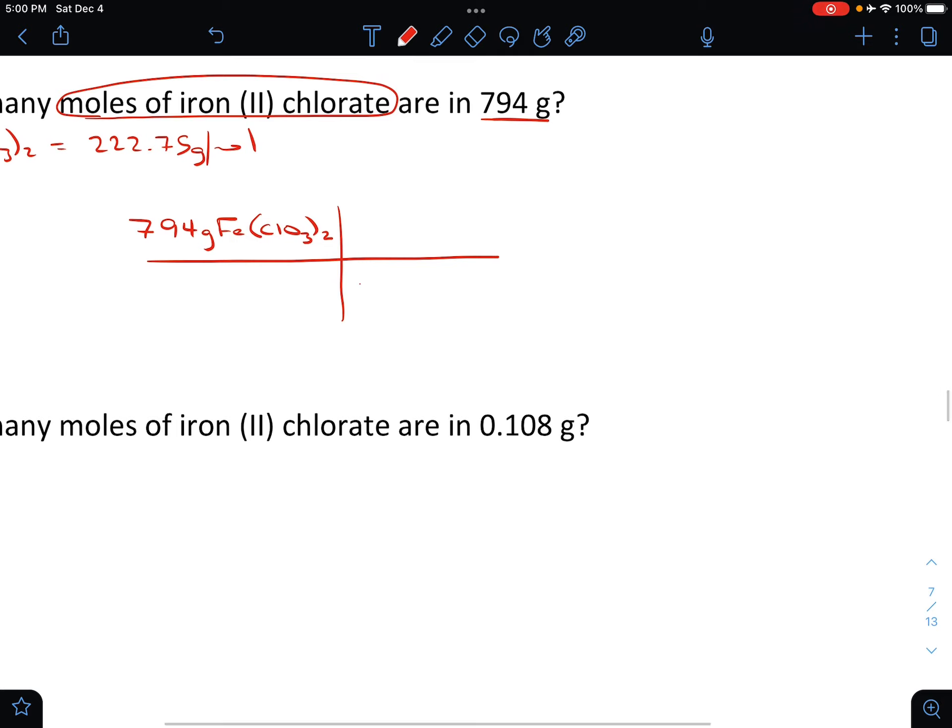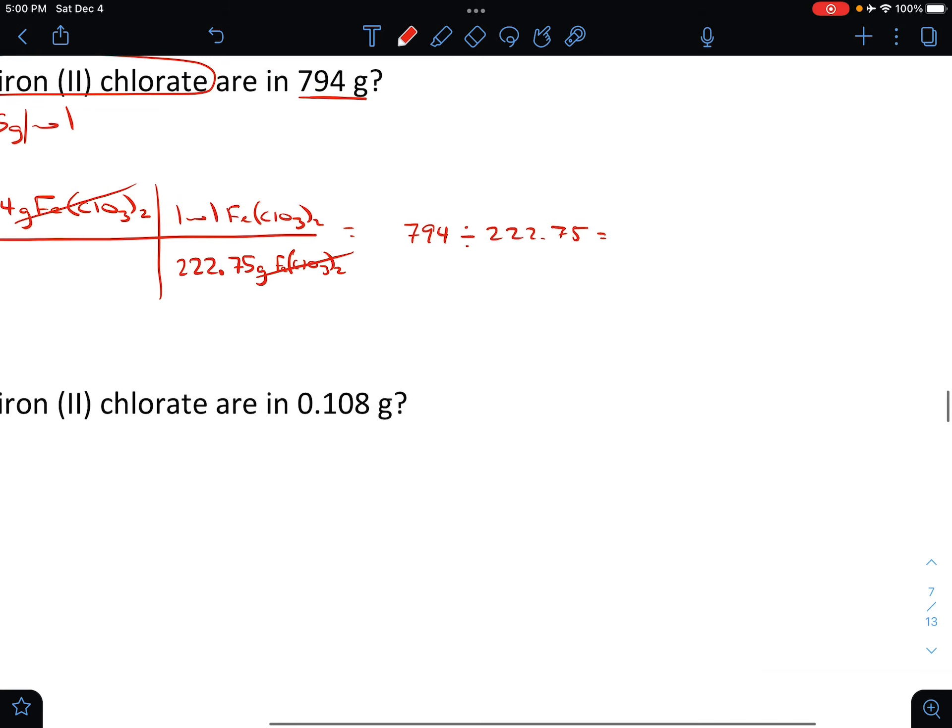And we're going to put 222.75 grams on the bottom, and one mole on top. Notice how this nicely cancels out our grams. All right, so all we're going to do in this is we're just going to take 794 and divide by 222.75. And we should get 3.56 moles.